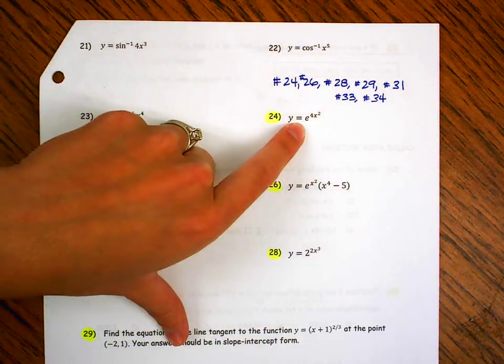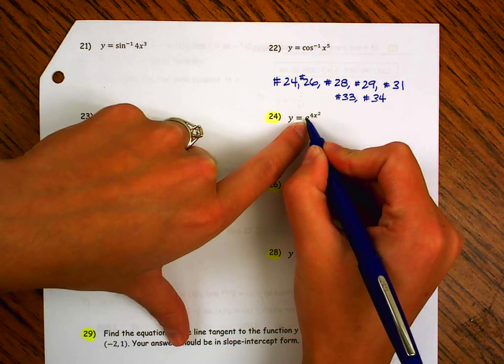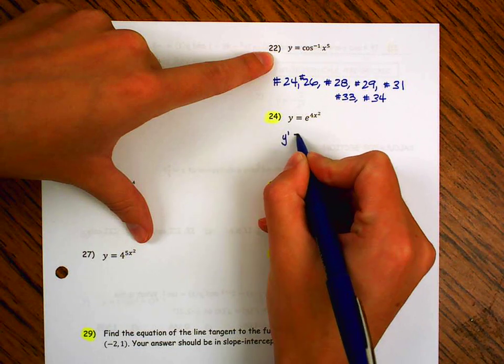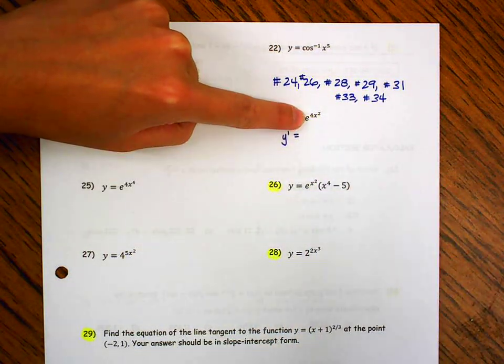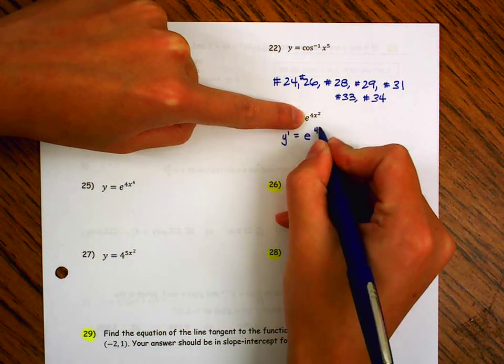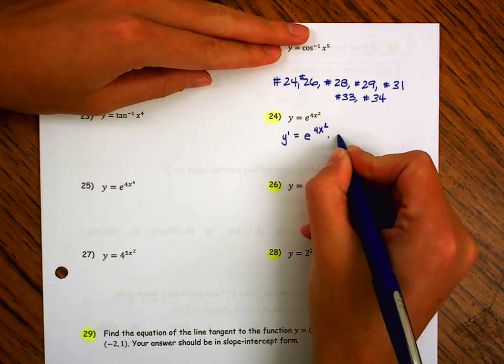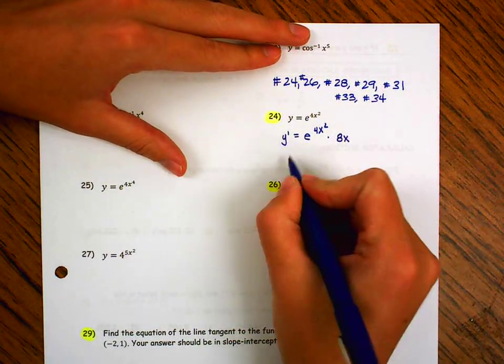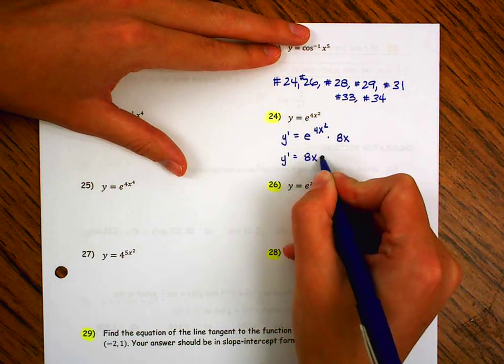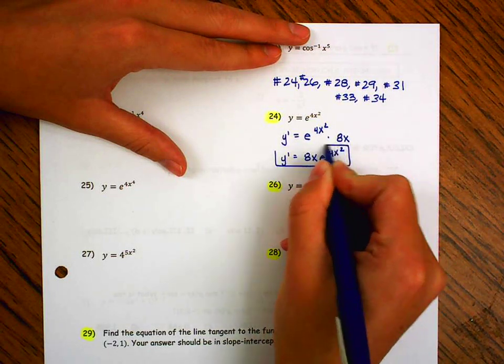So here's number 24. When I look at this, I say I have e to the stuff, right, or e raised to another function. So if I'm going to take the derivative, my derivative for e to the x is going to be e to the x. So my derivative, if I have e to the stuff, is going to be e to the stuff. Whenever I have stuff, I have to multiply by the derivative of stuff. Now, you could leave your answer like this, but if you wanted to rewrite it, it's a little bit more common to see it looking like this.